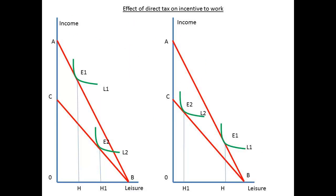Direct taxes have been argued against on the grounds there may be a disincentive to work. On the map on the left, OB represents maximum leisure, and the budget line for the individual is along AB. Point E1 is chosen on the highest indifference curve, L1. At this point, the individual is prepared to work HB hours per day. Tax reduces income to shift the budget line to CB. The individual may now choose point E2, and only offer H1B hours of work. On the other hand, the individual could respond as in the map on the right, shifting from E1 to E2 and increasing the hours of work. It's important to recognise that either outcome is possible.